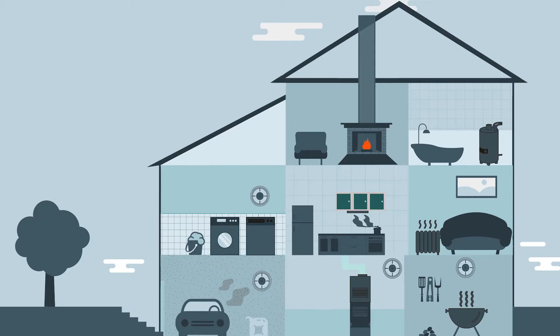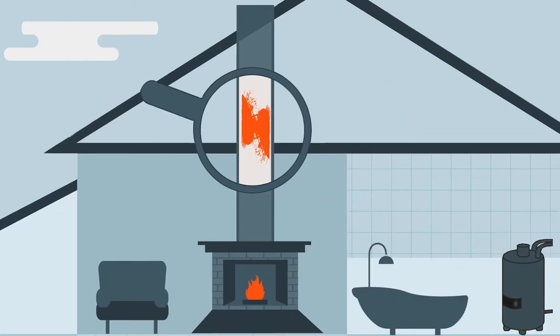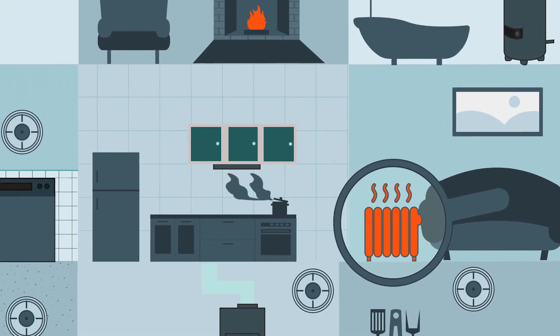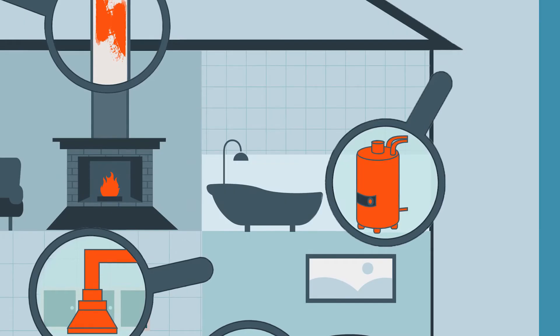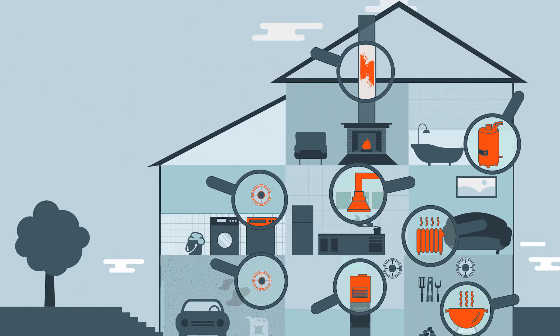Carbon monoxide can sneak up on us from various places around the house. Some of the most common sources include a clogged chimney, a faulty portable heater, an improperly installed kitchen radio or cooktop vent, a malfunctioning clothes dryer, a corroded or disconnected water heater vent pipe, and others.